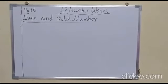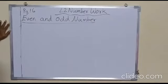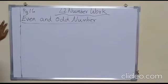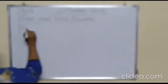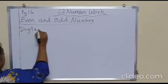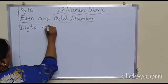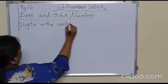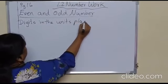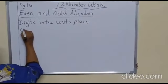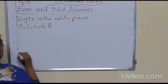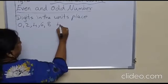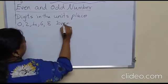Children, now see on page number 16 you have the topic even and odd numbers. What is an even number and what is an odd number? If the digits in the units place are 0, 2, 4, 6, or 8, then it is called an even number.